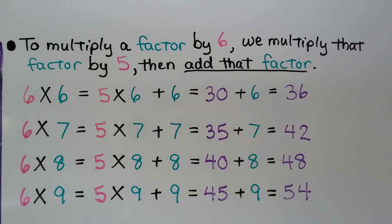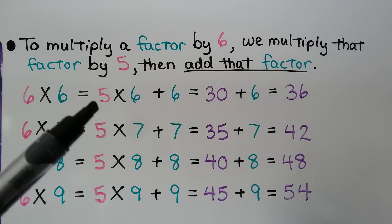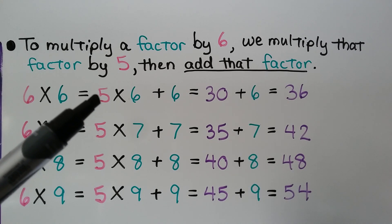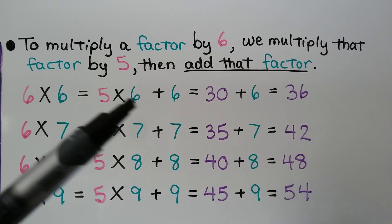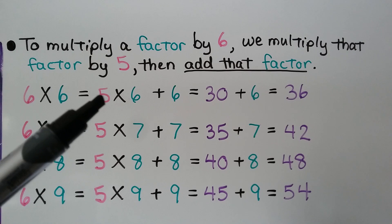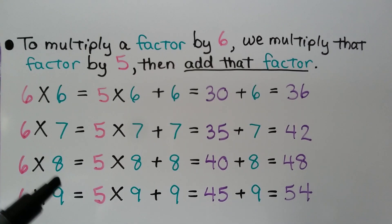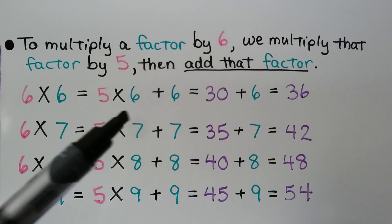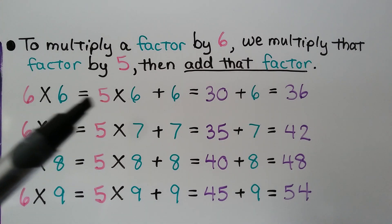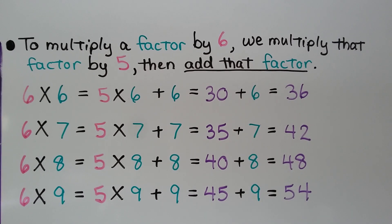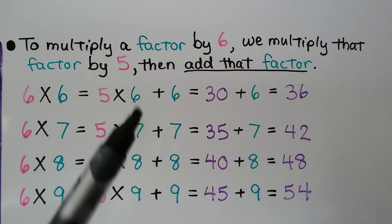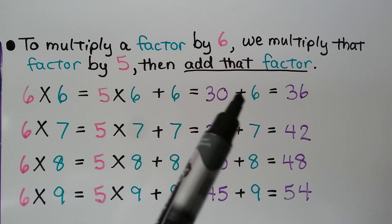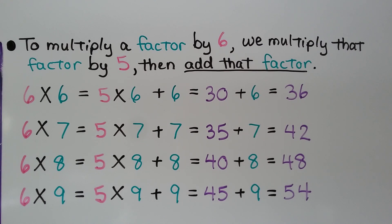To multiply a factor by 6, we multiply that factor by 5 and then add that factor. So if we want to do 6 times 6, we could do 5 times 6. We can skip count 6 numbers 5 times or 5 numbers 6 times — either way we get 5 times 6, which is equal to 30, plus 6 more. We start with 5 groups of 6, which is 30, add another group of 6, and 30 plus 6 is equal to 36.